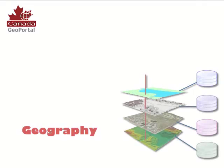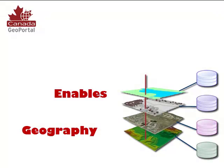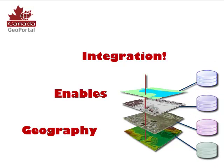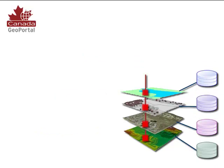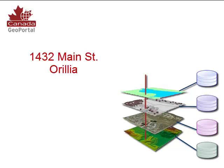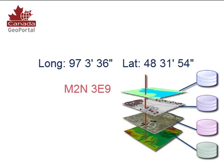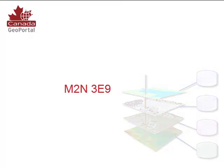Canada Geo Portal uses the geography that's already part of your data. This means that data from different systems can now be integrated based on common location information like an address, a region, a coordinate, or postal code.